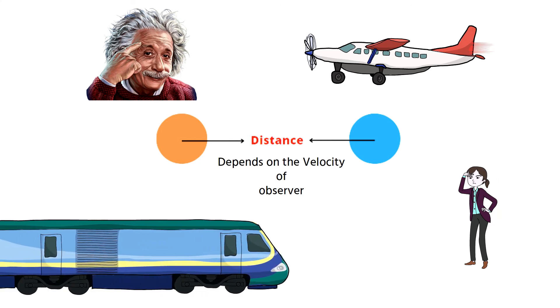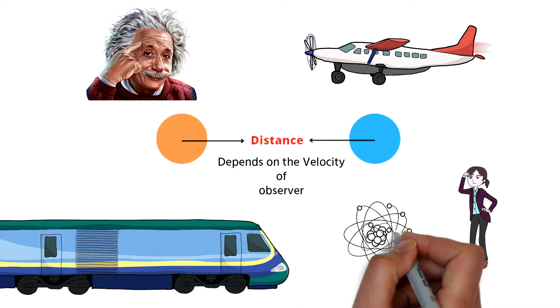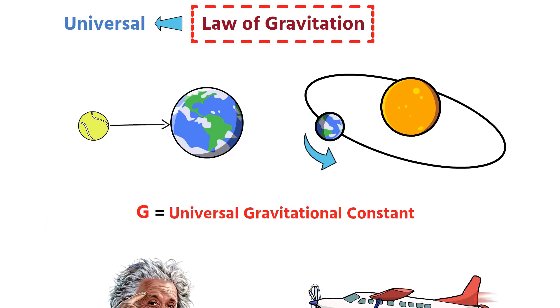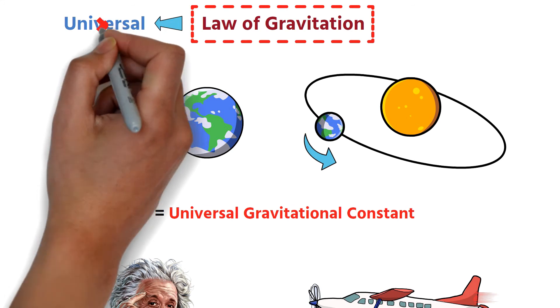And also Newton's law of gravitation does not apply to microscopic distances, such as atomic and nuclear distances. For these reasons, Newton's law of gravitation can no longer be called a universal law.